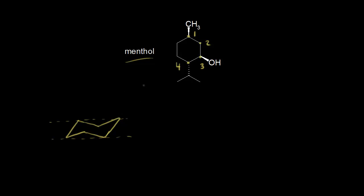Now we need to put in our bonds. We call this carbon one, and we know we start axial up at carbon one. Carbon two is axial down — we just keep alternating. Carbon three is axial up, carbon four would be down, carbon five is axial up, and then carbon six is axial down. Next we put in equatorial. So at carbon one this would be equatorial down, carbon two would be up, carbon three would be down, carbon four would be up, carbon five down, and finally carbon six would be up.